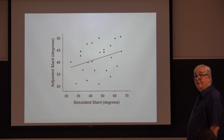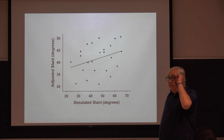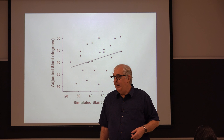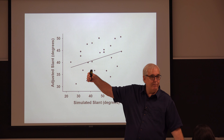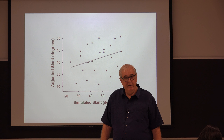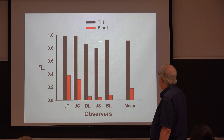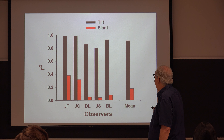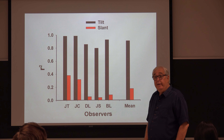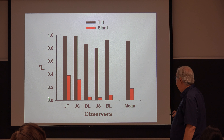Looking at the tilt component of their adjustments: almost perfect — correlation around 0.98. The kind of thing you'd never see in social psychology but you can get in perception. The slant judgments look basically like random noise. These are the same data — just converted into the two different components. All the tilt adjustments fall on a wonderful straight line. The slant judgments are randomly distributed. R-squared for tilt is between 0.8 and 1.0; for slant, subjects are pretty clueless.